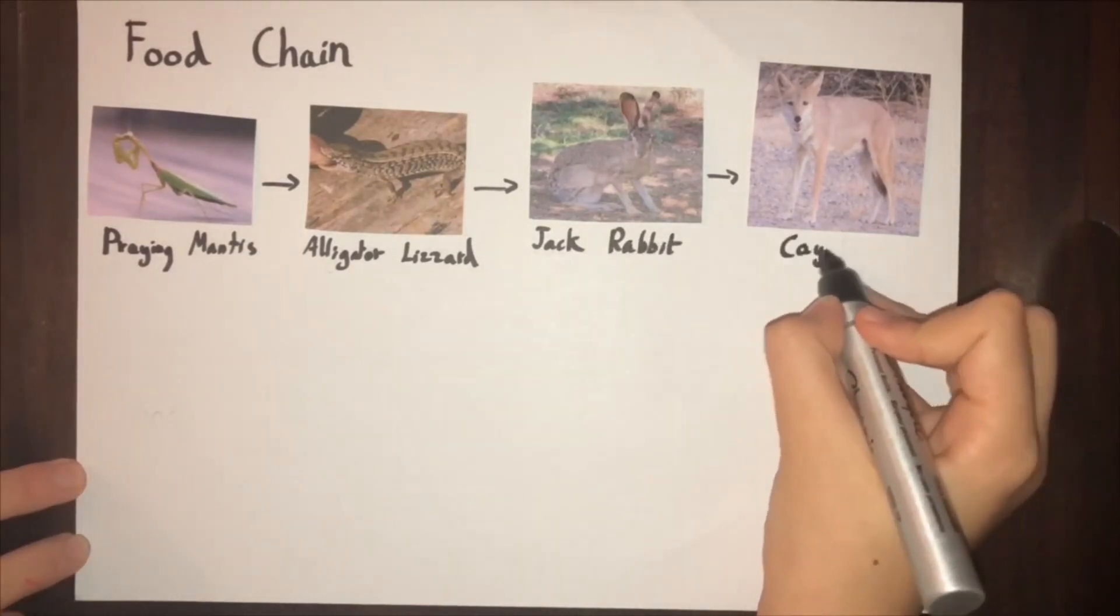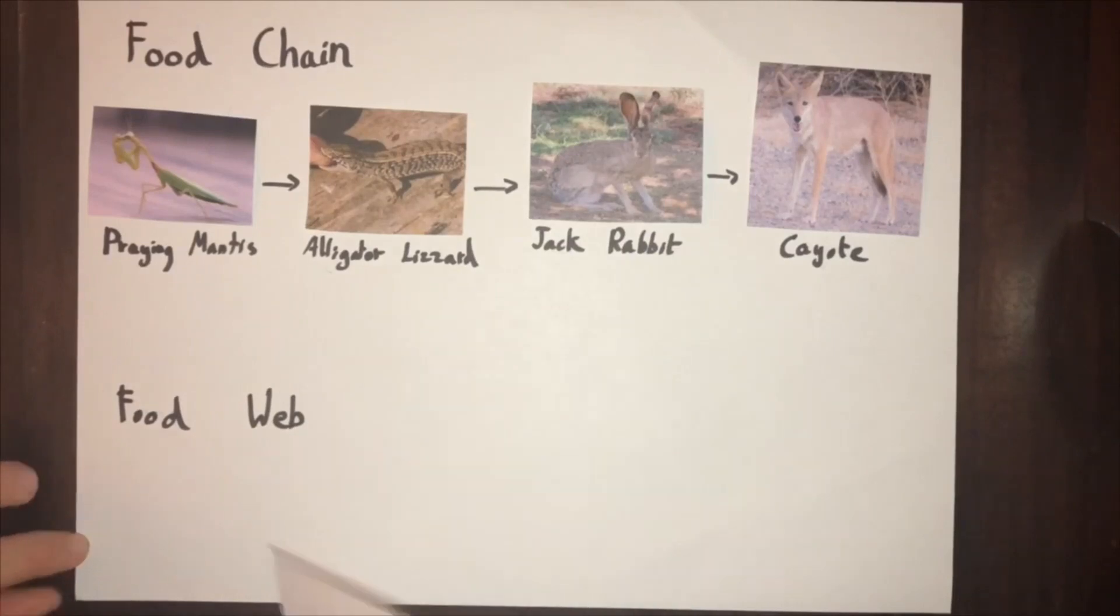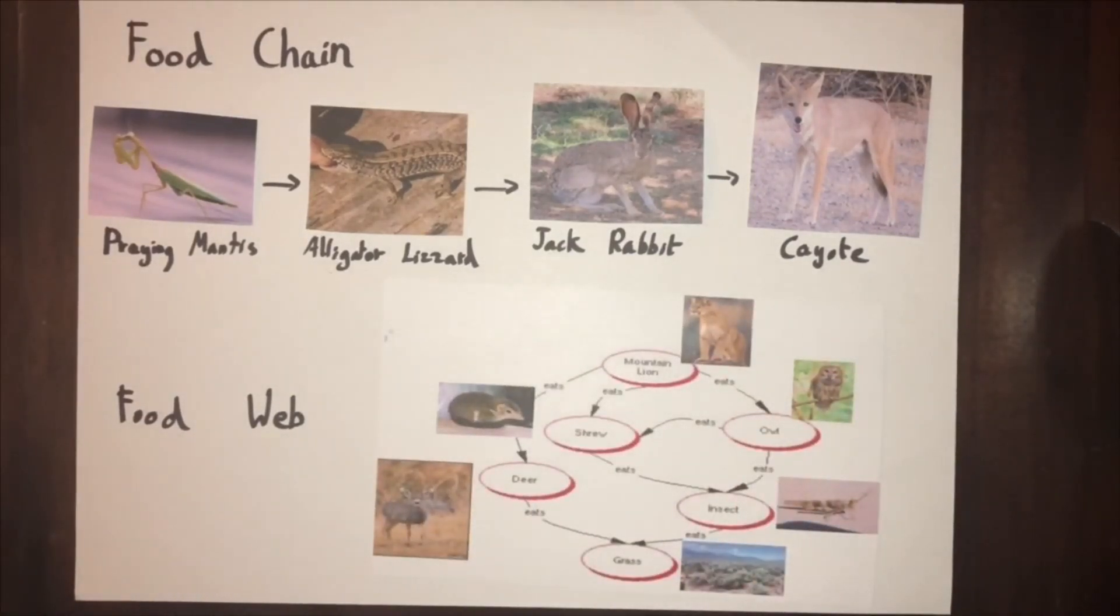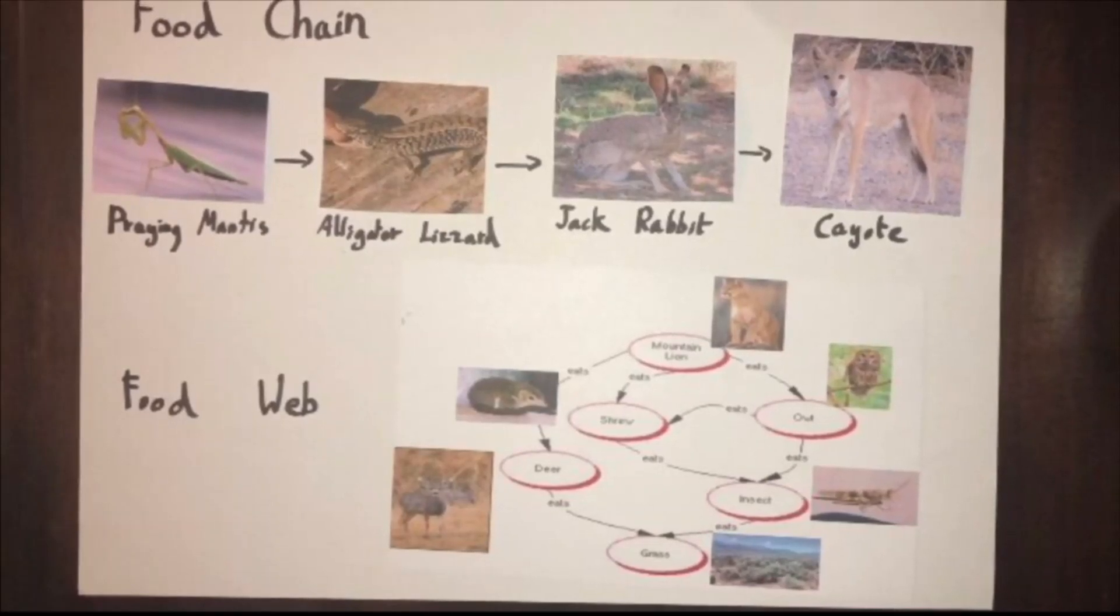A food web in the chaparral can also look like this. A food web is a set of linked food chains. Everything in food chains and food webs are biotic, meaning they are living components in an ecosystem.